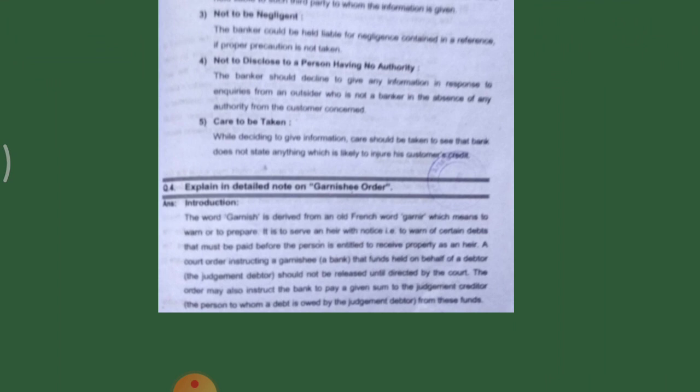This word Garnishee is derived from the old French word 'Garnir', which means to warn or to prepare. So it is to serve an heir with a notice, to warn that certain debts must be paid before the person is entitled to receive property as an heir.